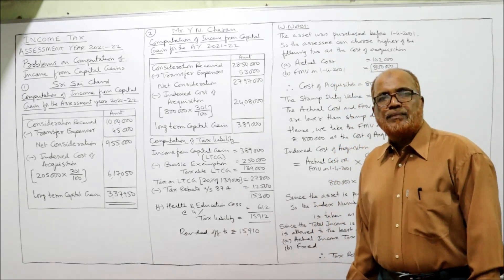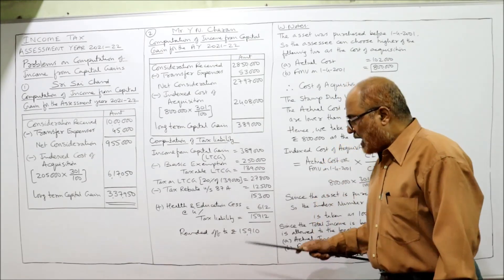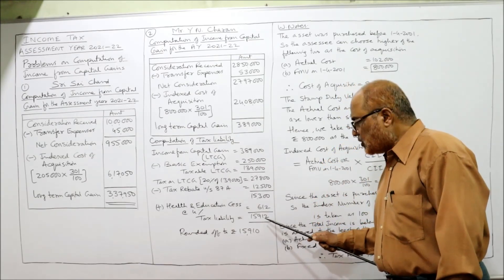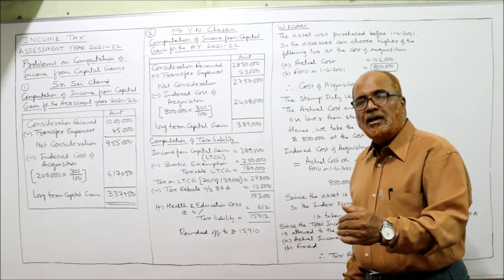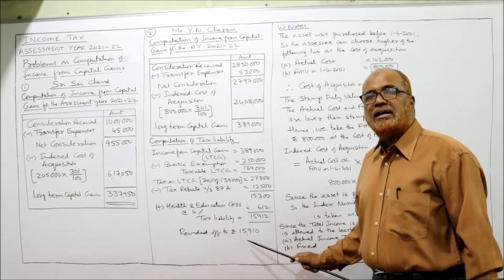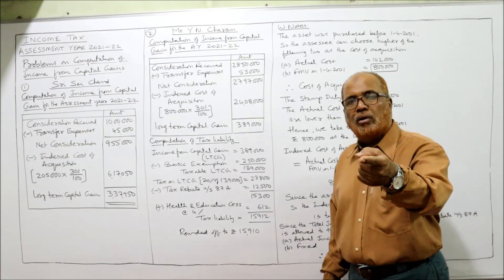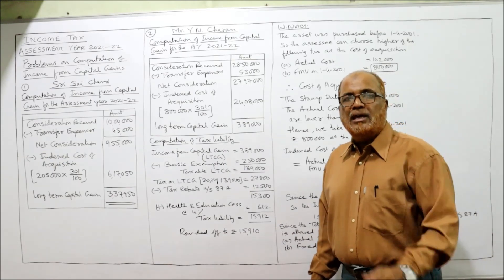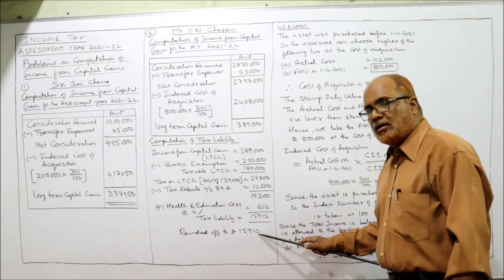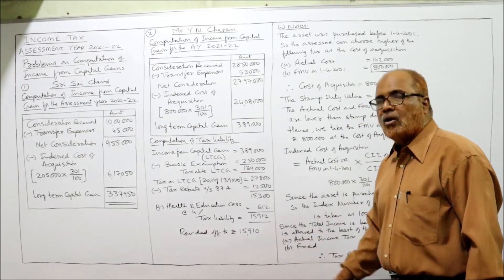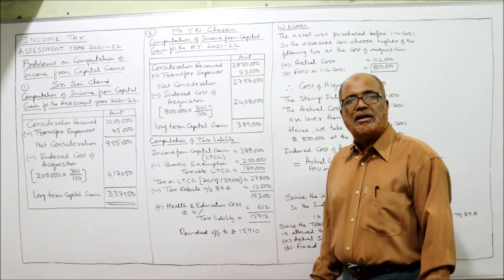The tax liability should be rounded off to the nearest ten rupees. The last two digits are 12, which is below 15, so we round down — the final digit becomes 10. Rounded off tax liability is rupees 15,910.